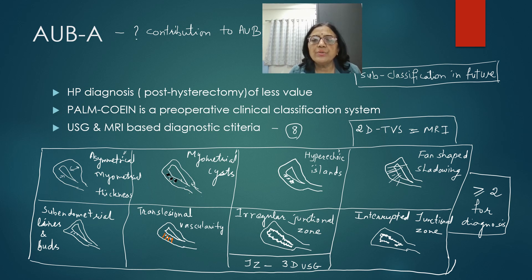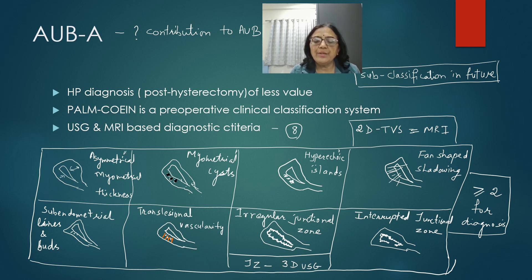Sub-classification of adenomyosis — such as whether it is generalized, focal, or multifocal, and how much of the uterus is involved — is likely to come in future. At present, in AUB-A, adenomyosis is simply classified as either present or absent.